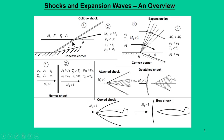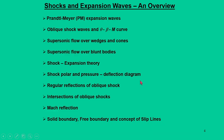Before starting, I will give a brief introduction of what we have already studied: oblique shocks, expansion waves, normal shocks, attached shocks, detached shocks, curved shocks, and bow shocks. To summarize, we discussed Prandtl-Meyer expansion waves, oblique shock theory in the form of theta-beta-M relations, flow past wedges and cones, blunt bodies, shock expansion theory, shock polar and pressure deflection diagrams, regular reflections of oblique shocks, Mach reflections, solid boundaries, free boundaries, and slip lines.